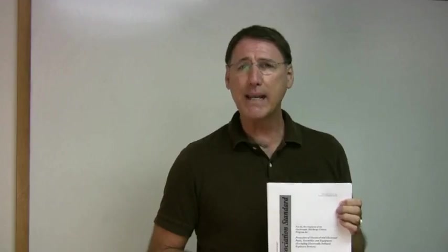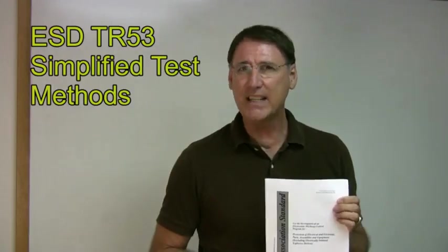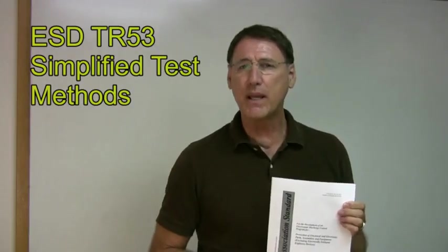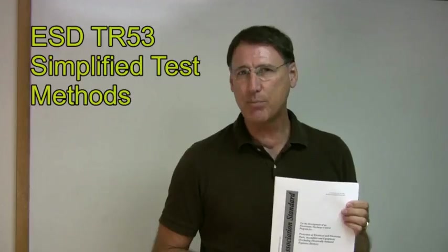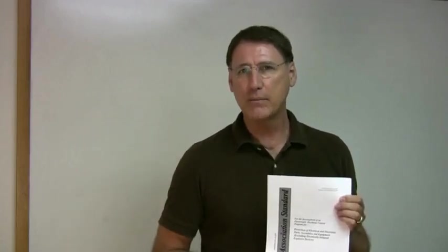The compliance verification columns have been added to table three in the 2007 update and the test method is ESD TR-53. This document, ESD TR-53, documents simplified test methods that good companies today use in their facilities to test their EPA ESD control items. That document is for sale by the ESD Association and we recommend very much that you get it.